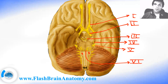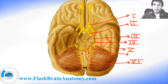Cranial nerve number 7 innervates the posterior belly of the digastric muscle and also innervates the stapedius muscle. This is nerve number 7 and it is called the facial nerve.